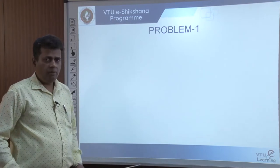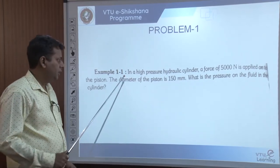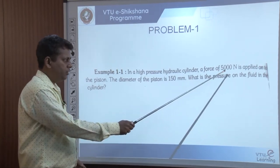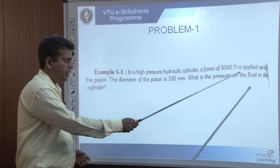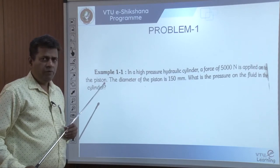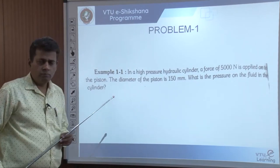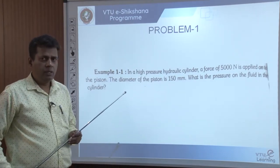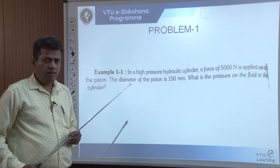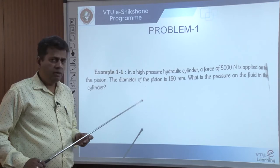The first problem I am going to solve: In a high-pressure hydraulic cylinder, a force of 5000 Newton is applied onto the piston. The diameter of the piston is 150 millimeter. What is the pressure acting on the fluid? We need to analyze certain key things here, and I will be methodically solving this problem and giving you the solution.